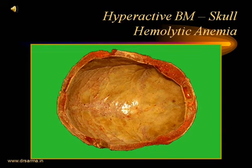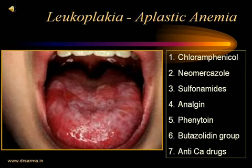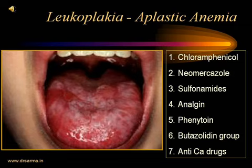In many hemolytic anemias, the bone marrow will be hyperreactive. This picture of the skull calvarium shows hyperreactive bone marrow with very thick, prominent red marrow. In aplastic anemia, the bone marrow — the RBC production factory — is on strike, with no or reduced production of red cells and other formed elements. Bone marrow aplasia occurs due to many causes, notably drugs like chloramphenicol, neomercazole, sulfonamides, analgin, phenytoin, butazone group drugs, and anti-cancer drugs. Oropharyngeal leukoplakia is very common in aplastic anemia.